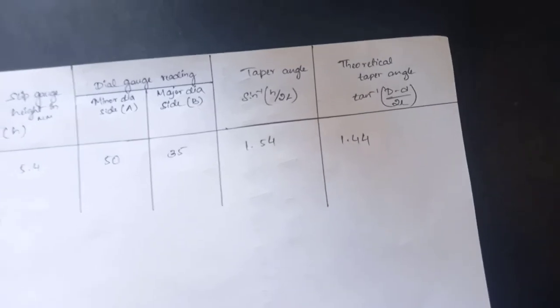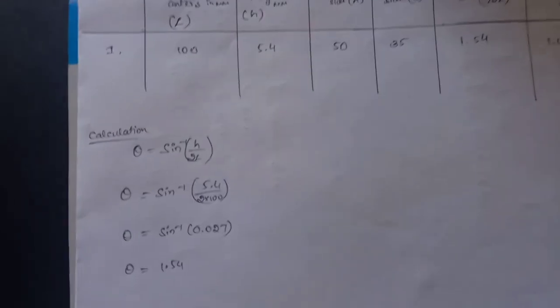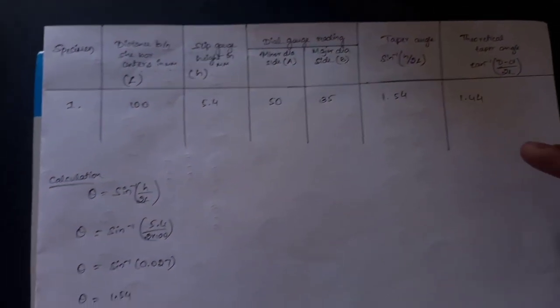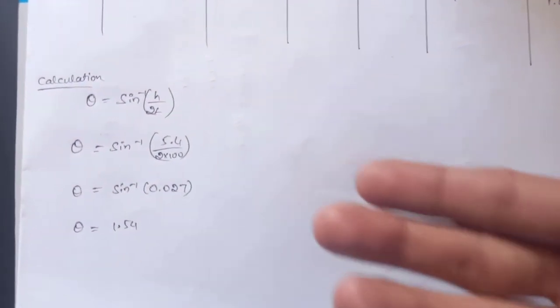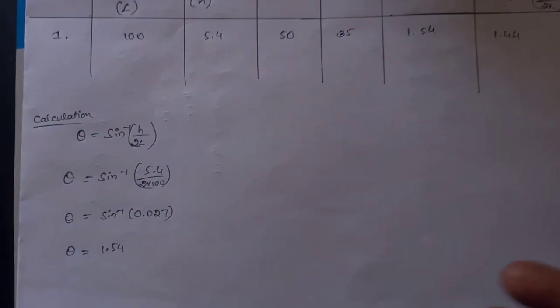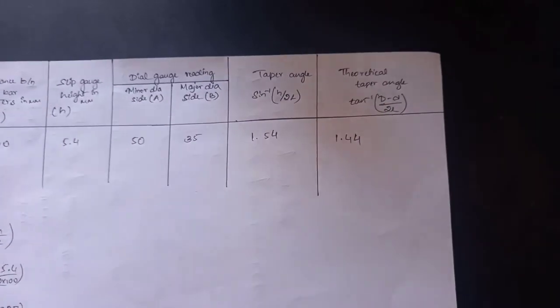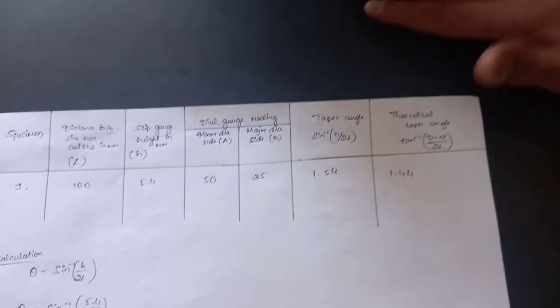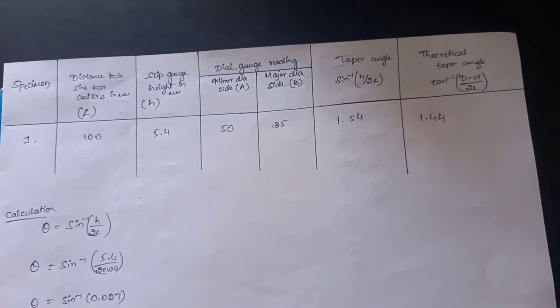From the given values we have to find the taper value using the formula sine inverse h by 2L for the practical value. For the h we have taken 5.4 which is the gauge height. By applying the formula and the values, we have got the taper angle as 1.44, which is accurately equal to the theoretical angle, which concludes that the surface and the sine bar taper specimen are parallel.